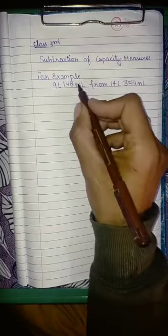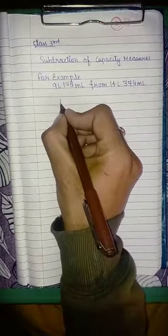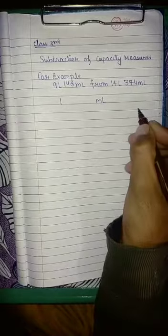So whenever there is 'from' written, that means you have to subtract the number from this number that is on the right hand side. So we will separate out the values of liter and milliliter first.